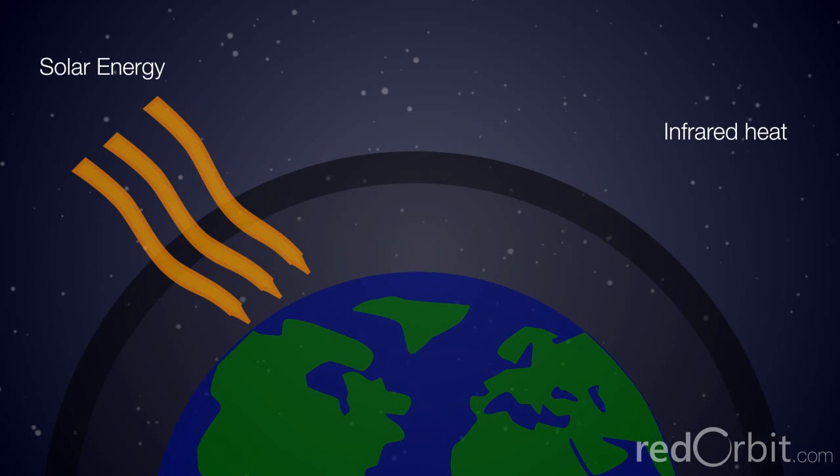The solar energy reaching the surface of the Earth is concentrated in short wavelengths, which can easily penetrate the greenhouse gases, such as carbon dioxide and methane.